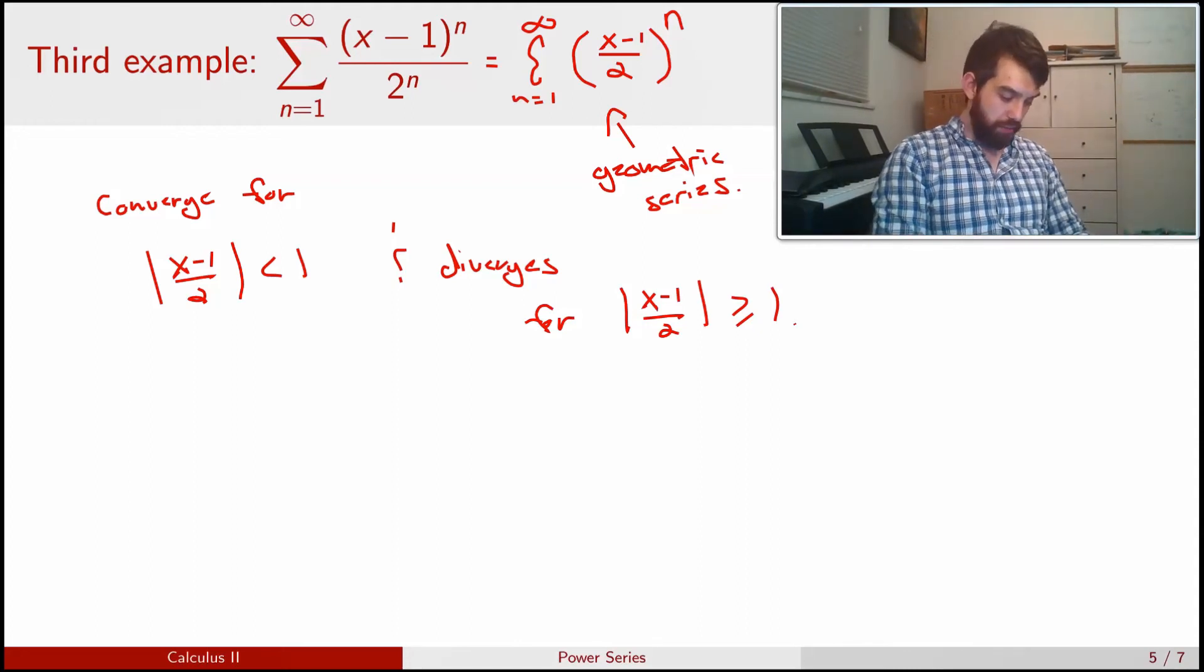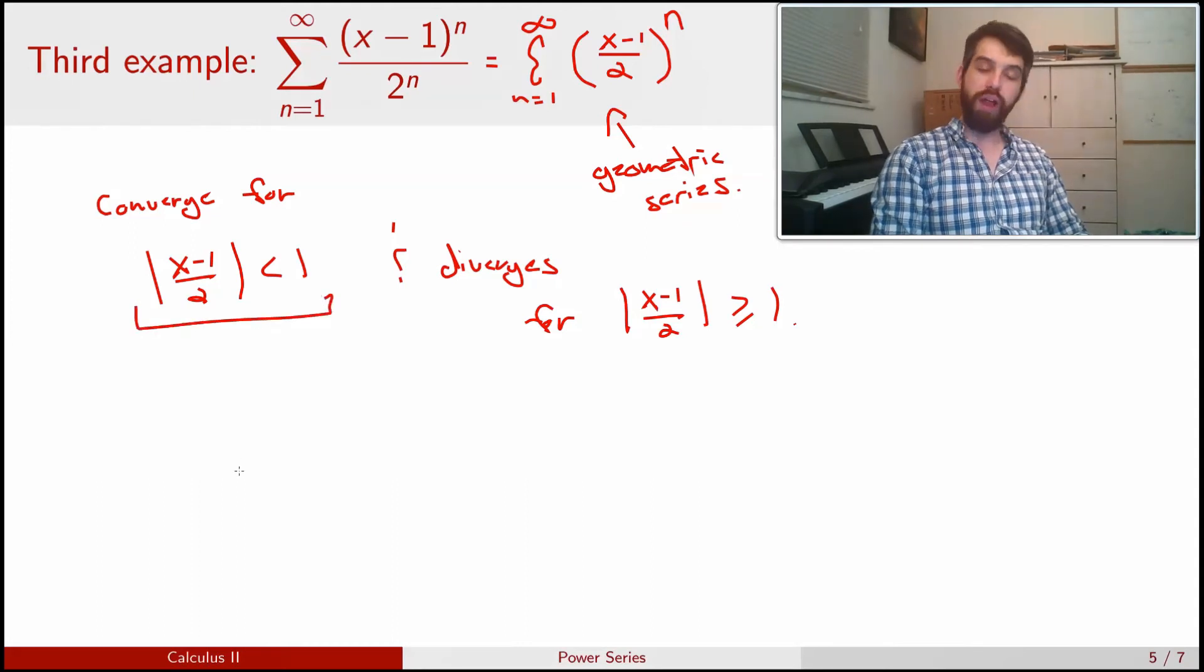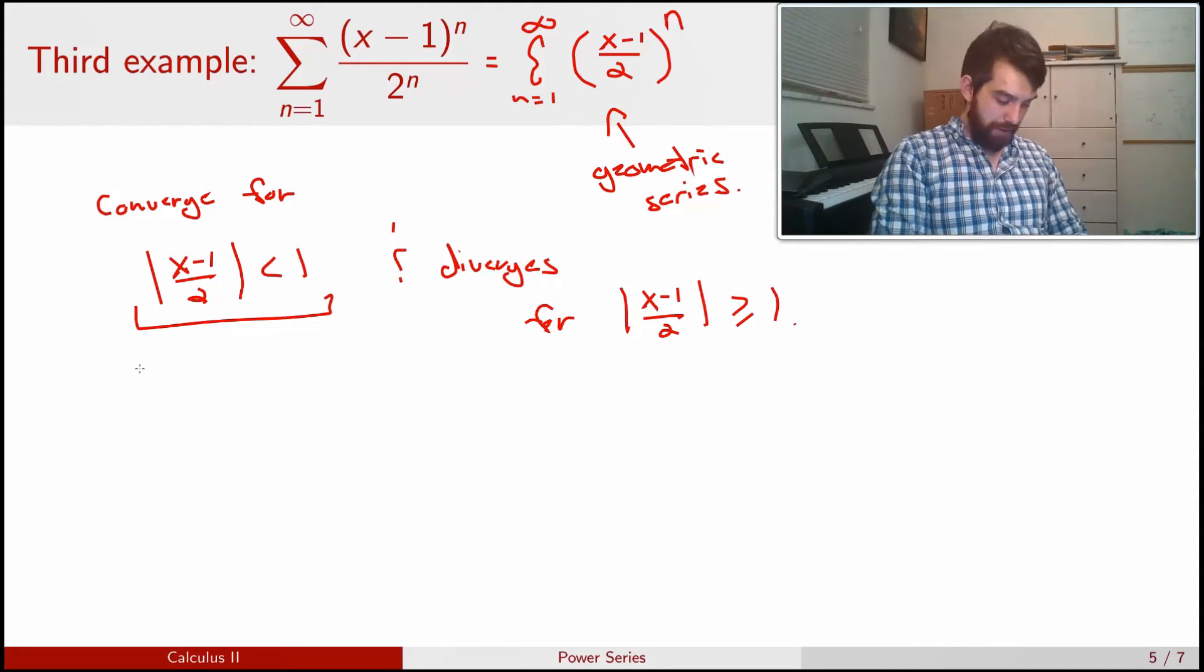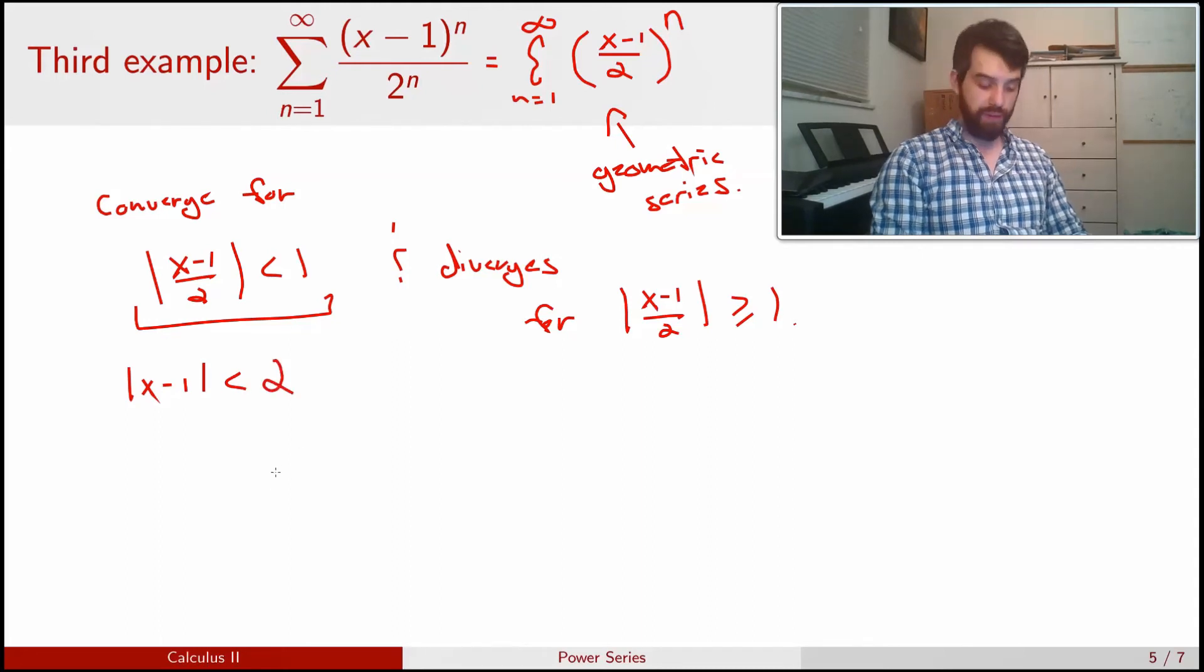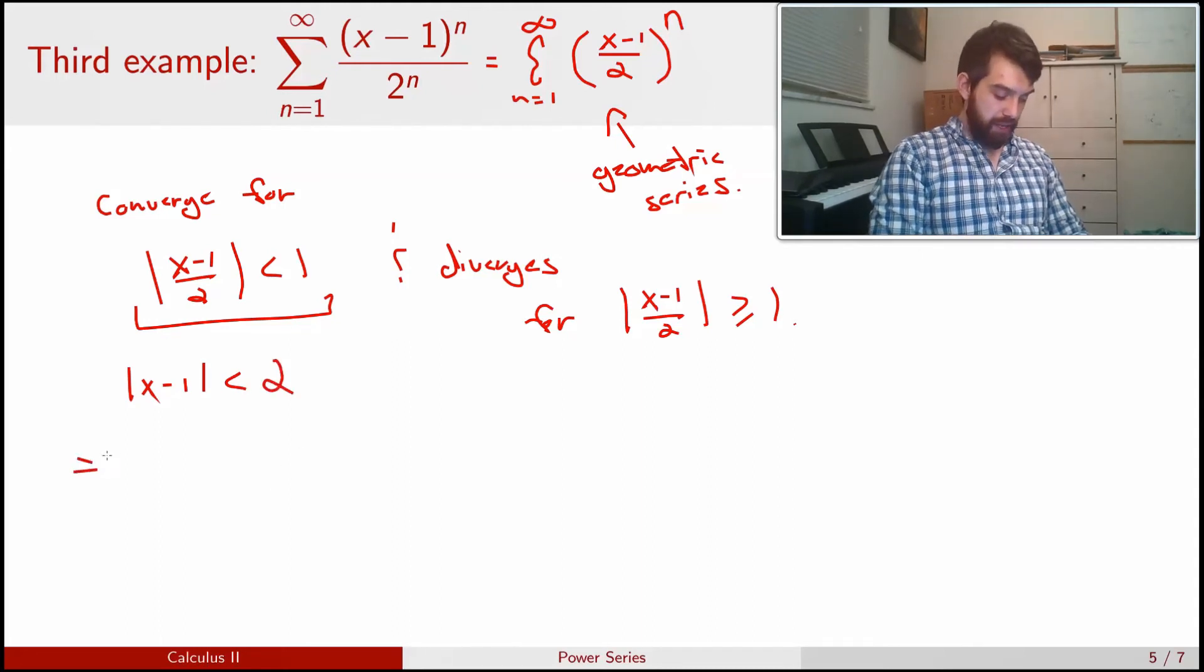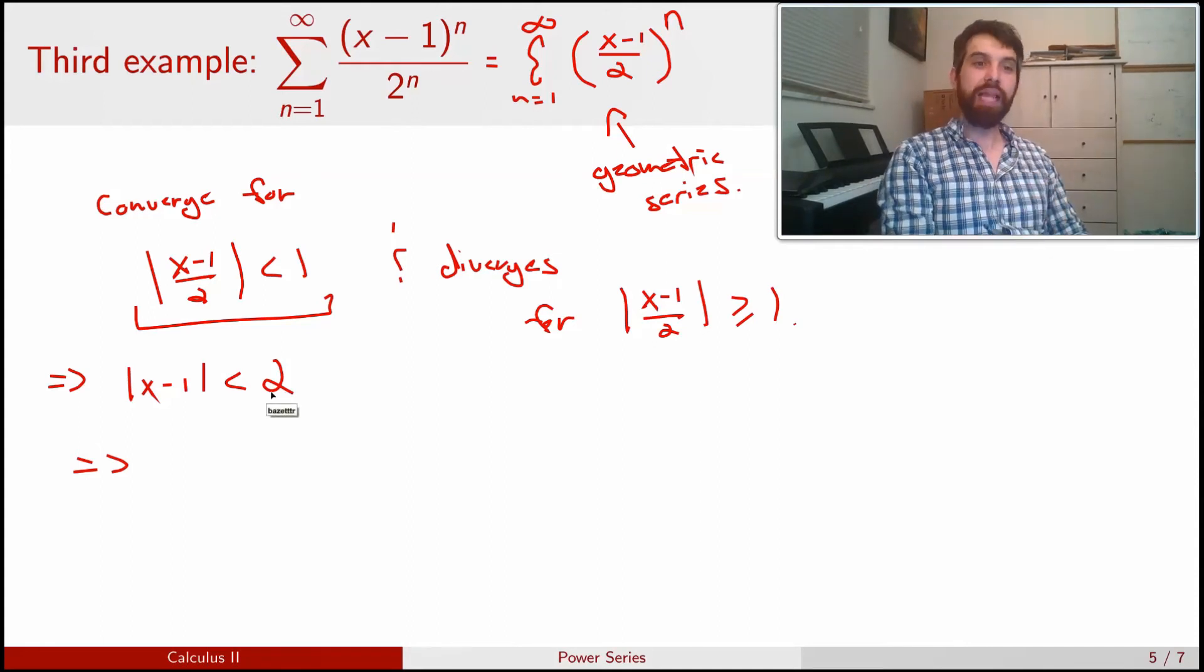Alright, so now I want to look at this. |(x - 1)/2| less than 1. First thing I can do is I can say that this is |x - 1| less than 2, so I've multiplied the 2 up. And then what I can say is I have to interpret the absolute values here. What I think about this is that this means my x's have to be less than 2 away from the value of 1.